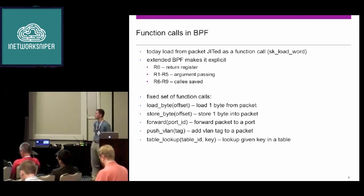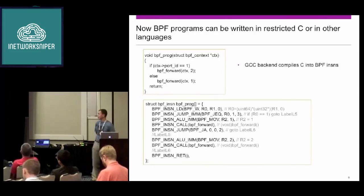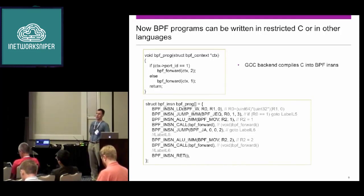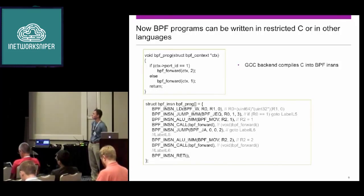The examples of helper function calls include load-byte, load-half, load-word that exist today, plus extending them for store-byte and forwarding. On the bottom you can see the BPF instructions written in similar mnemonics as before. In early days you'd have to write your BPF in assembler. Sophisticated tools like Wireshark could generate things, but now with restricted C and a GCC backend for it, you can write these little programs in C, which makes it a lot easier to understand.